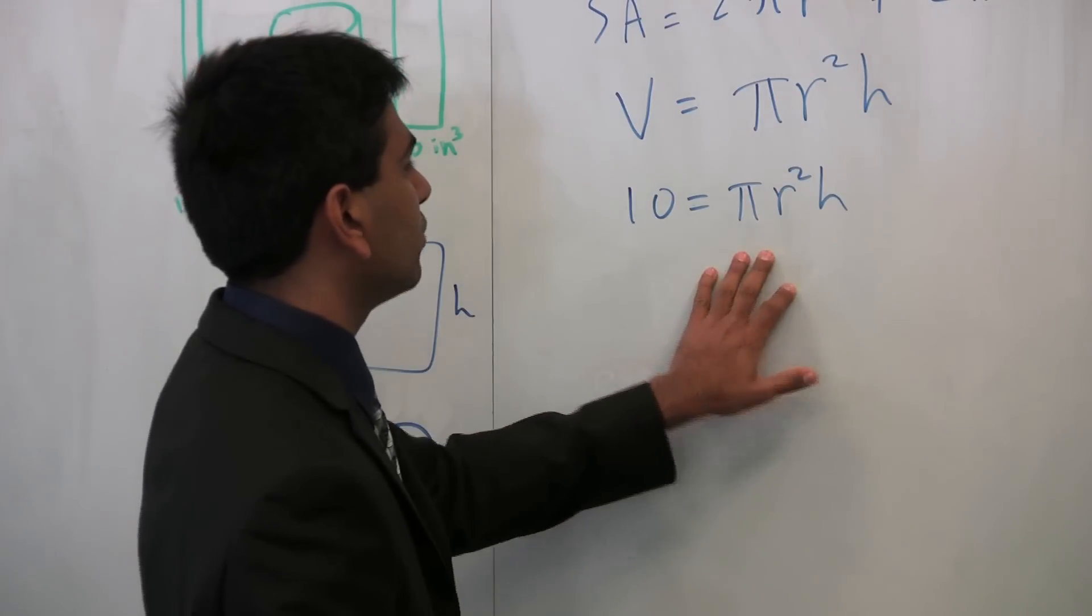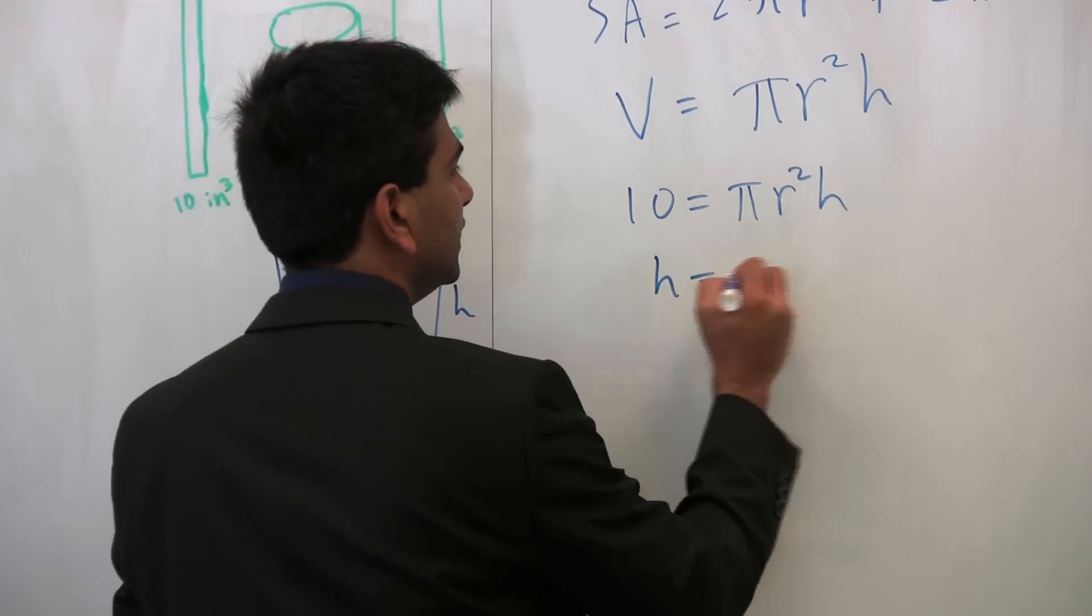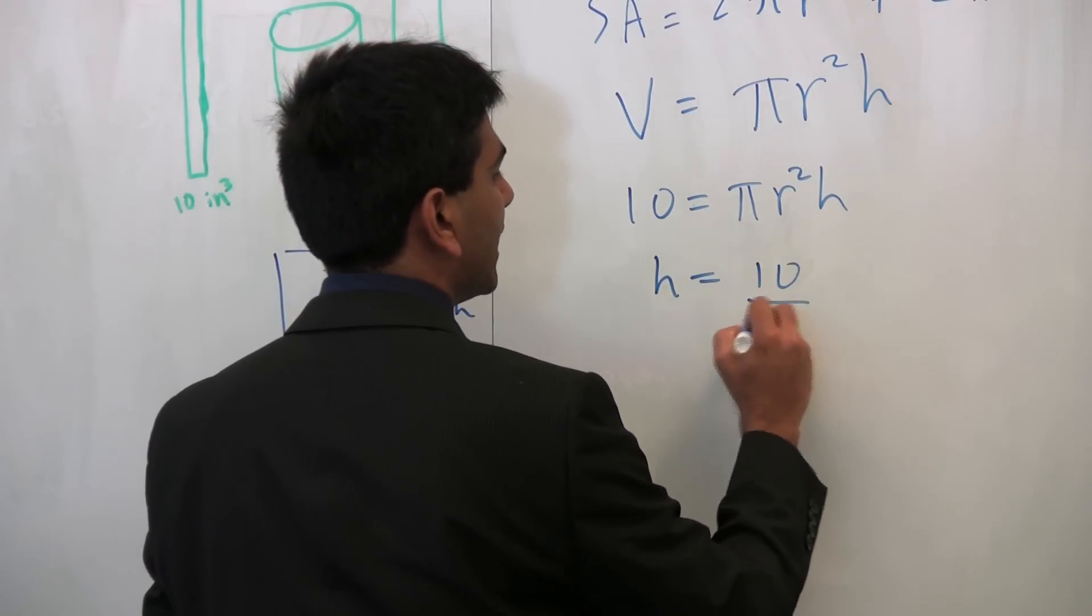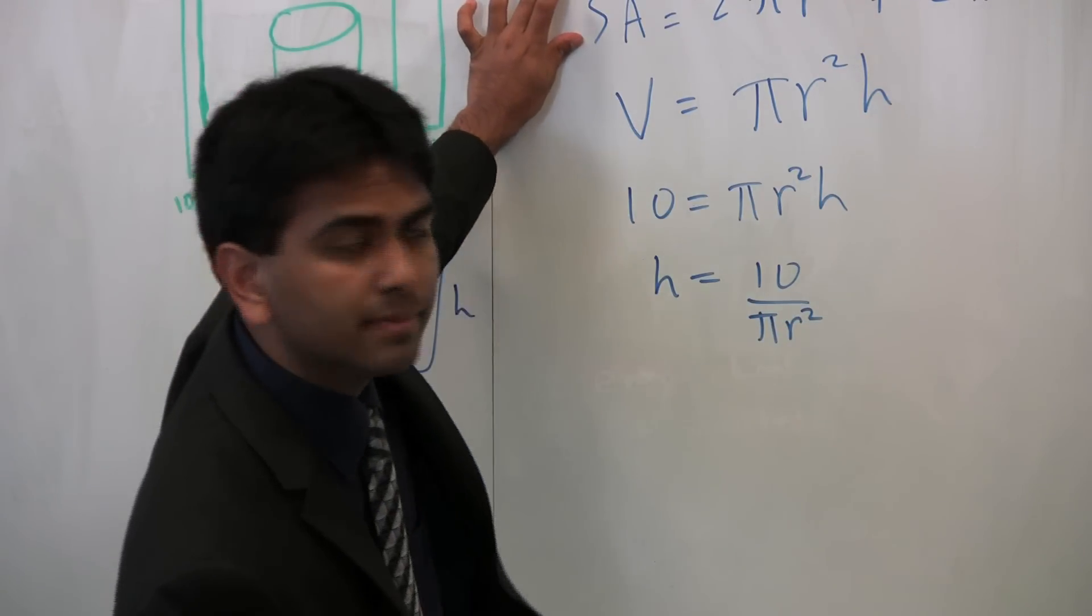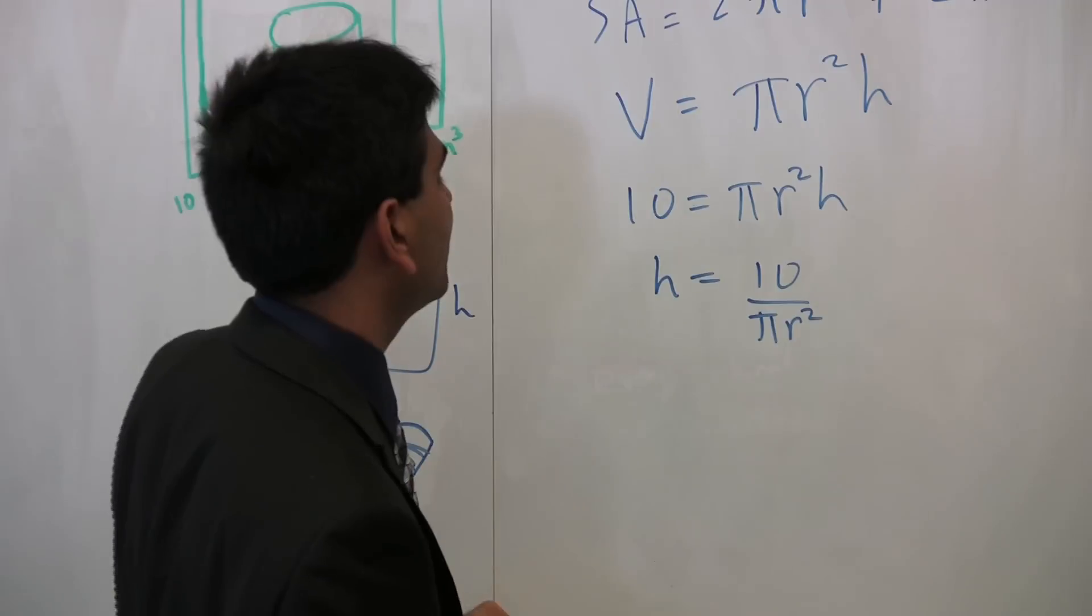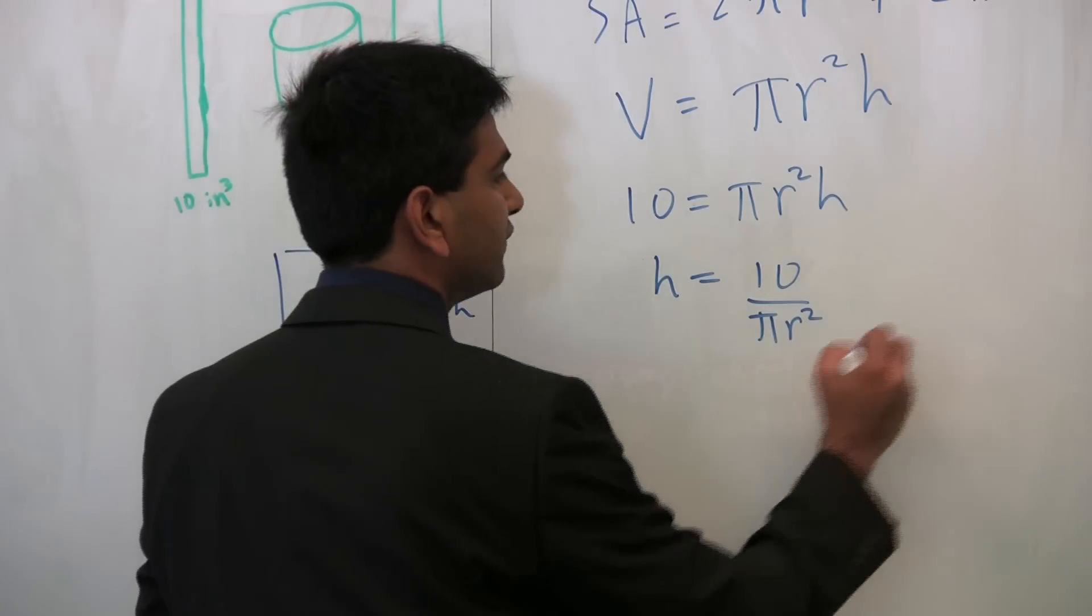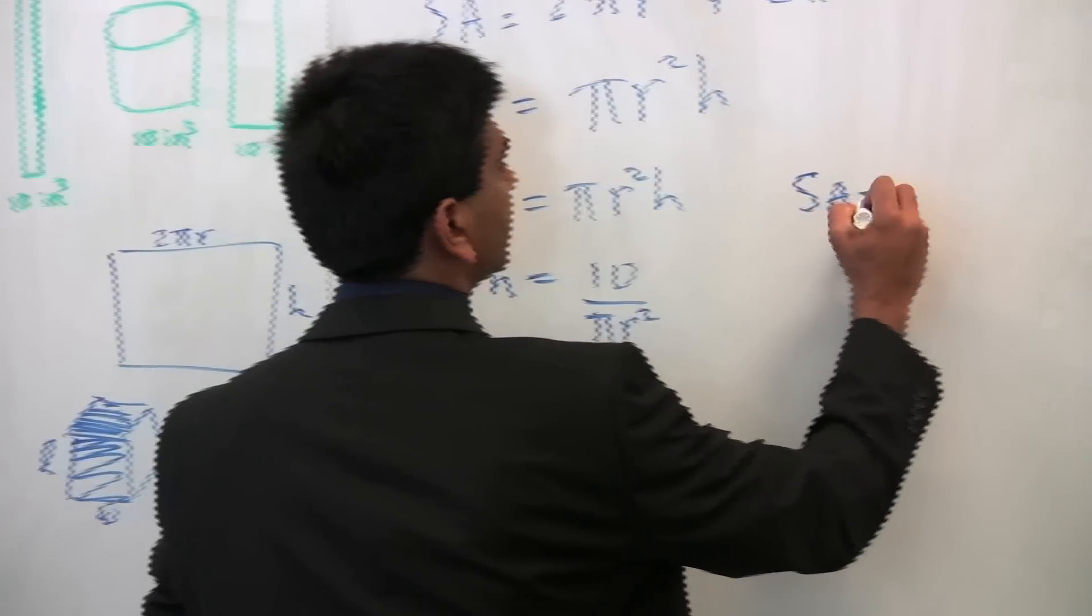So our constraint equation is that 10 equals pi r squared h. So now we can solve, in terms of one variable, here h equals 10 over pi r squared. And we can use this into the equation that we actually want to optimize, which is surface area. We want to minimize surface area.